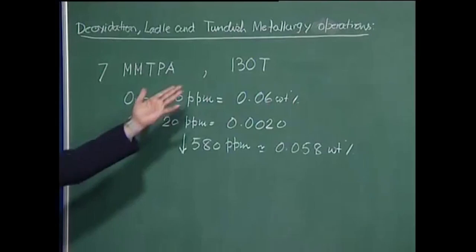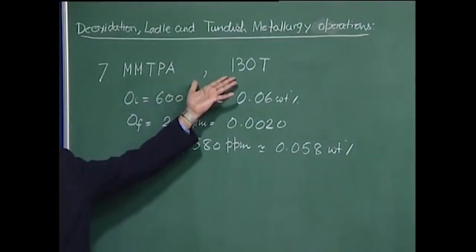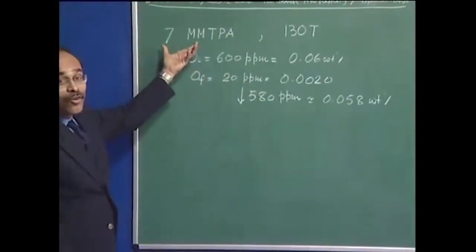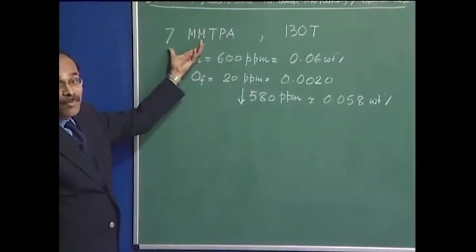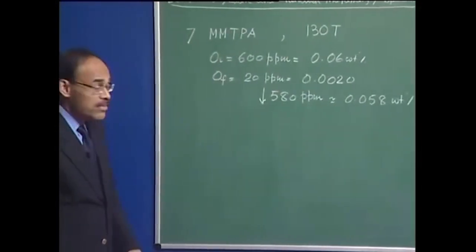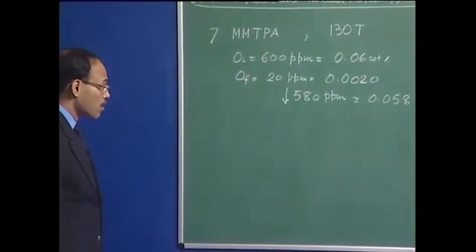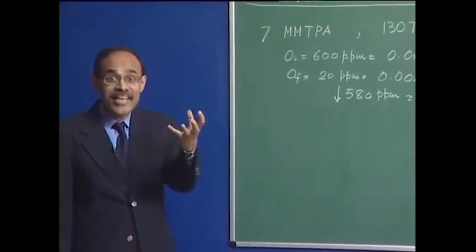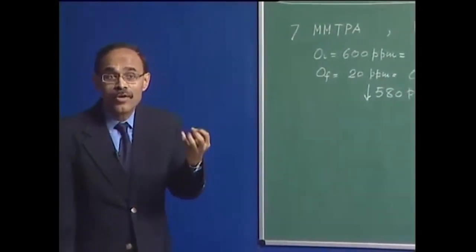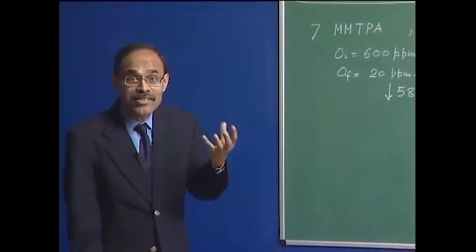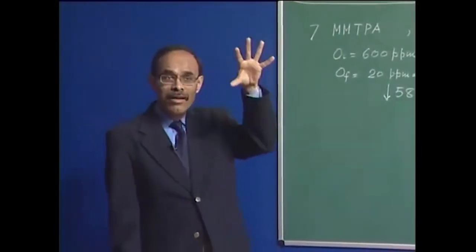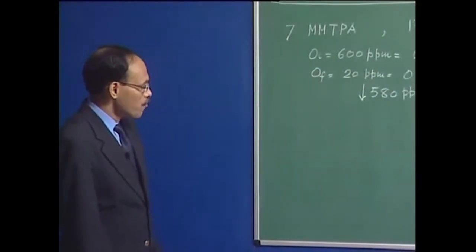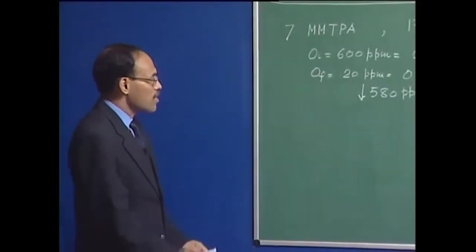You can imagine, with reference to a 130-ton ladle, the amount is going to be really huge. And if you translate that amount in metric tons per annum in production, the total amount of oxygen removed is going to be really enormous, which essentially implies that we require a lot of aluminium to deoxidize the bath.